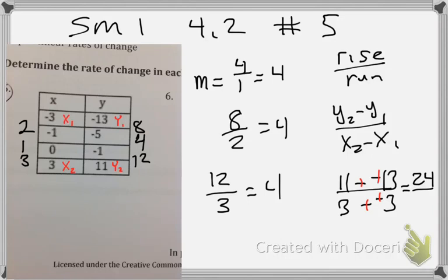What's 3 plus 3? 6. What's 24 divided by 6? Son of a gun, it's 4. We got it.